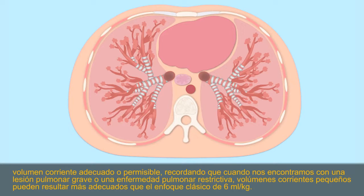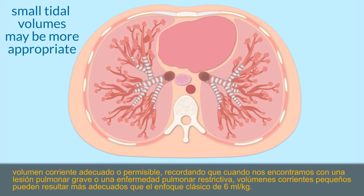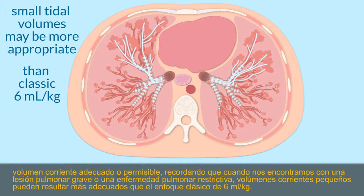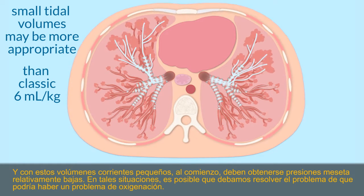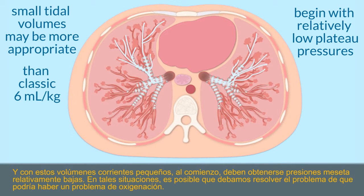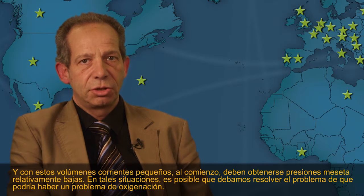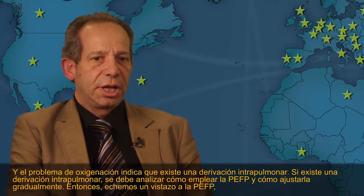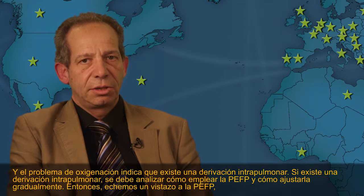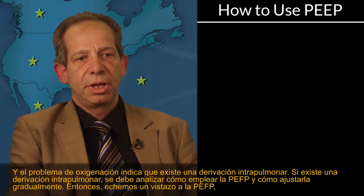Remembering that when we have severe lung injury or restrictive lung disease, small tidal volumes might be more appropriate than the classical 6 mL per kilogram. With this, you should end up initially with relatively low plateau pressures. In such situations, you may encounter a problem with oxygenation, which indicates intrapulmonary shunt. If you have intrapulmonary shunt, you have to discuss how to use PEEP and how to titrate PEEP.